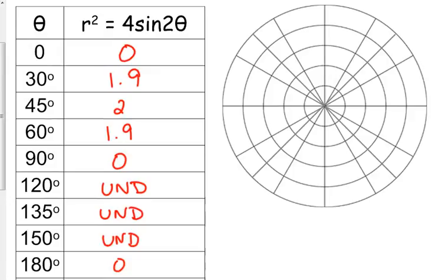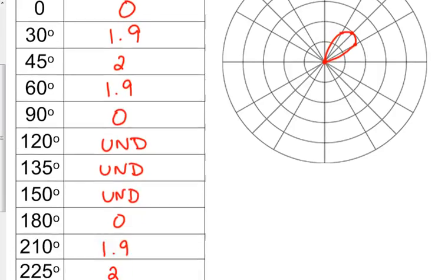Okay, so what we've got here is 0, 0, 1.9 to 1.9. So we've got a petal or a loop right there. Then we're undefined in the second quadrant. There's nothing to graph there. And then we get 1.9 to 1.9 in the third quadrant, and nothing in the fourth quadrant, because we're all undefined there. Okay? So it's like half of our rose curve. It's like half of our rose curve.